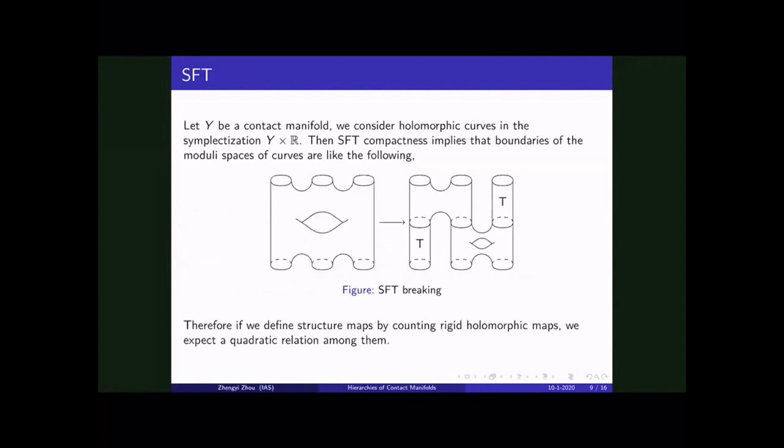So let me first tell you what is SFT. So let Y be a contact manifold. And we can consider holomorphic curves in the symplectization, which is you time Y with copy of R. You can make this thing a symplectic manifold. It's open symplectic manifold. And then we consider holomorphic curves in this symplectized manifold with punctures and also genus. And we need to consider the compactification of our moduli space. So a typical degeneration for our moduli space will be like the picture in the slide, which is you have a curve, but it will develop into two levels. So cylinder with T here means a cylindrical, sorry, means a trivial cylinder. You can basically forget about them. And if we define some structure map by counting rigid holomorphic curves, that is like holomorphic curves with the main virtual dimension zero. And this picture basically tells me that the one dimensional moduli space will have boundary basically like a two level buildings. So that means if we define structures by counting rigid curves, the relation we have will be some kind of quadratic relation.